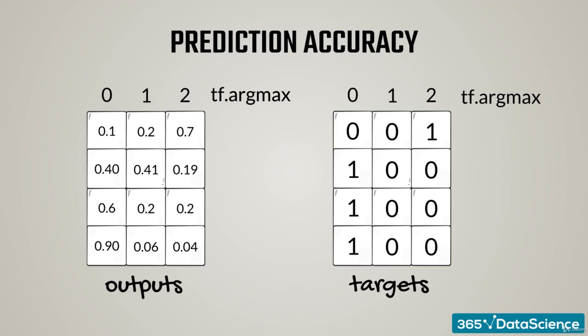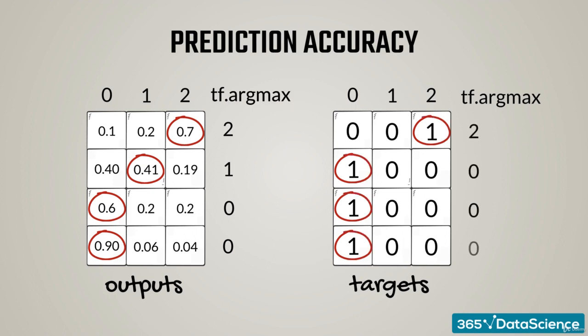So, for the case of our outputs, we will have 2, 1, 0, 0. For our targets, the columns will be 2, 0, 0, 0.